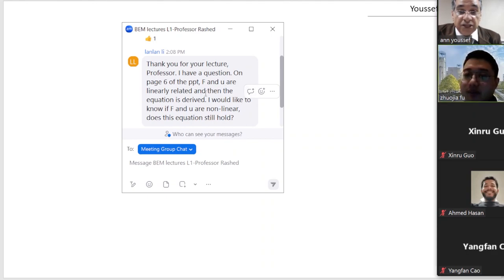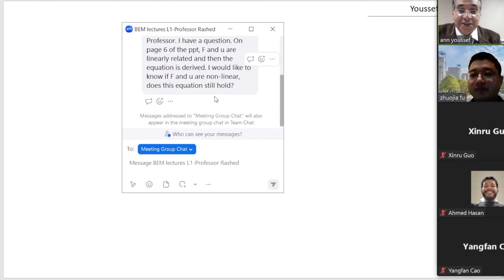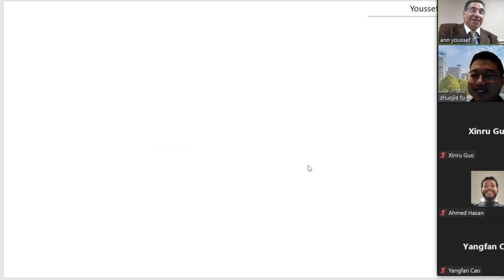I have a question on page six of the PowerPoint. If F and U are linearly related and then the equation is derived. I would like to know if F and U are nonlinear, does the equation still hold? No. No. As simple as that. No. But I'm discussing something now with my colleagues. We can do something. Okay. But let me examine it first. And after that, I will send it to you.